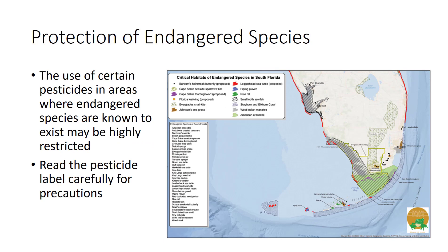Federal and state laws are in place to protect endangered species from extinction. An endangered species is any rare or vulnerable animal or plant species that is in danger of becoming extinct. To ensure that endangered species are protected, the use of certain pesticides in areas where endangered species are known to exist may be highly restricted. Before using a pesticide, read the pesticide label carefully for precautions to protect endangered species and for the location of restricted areas.